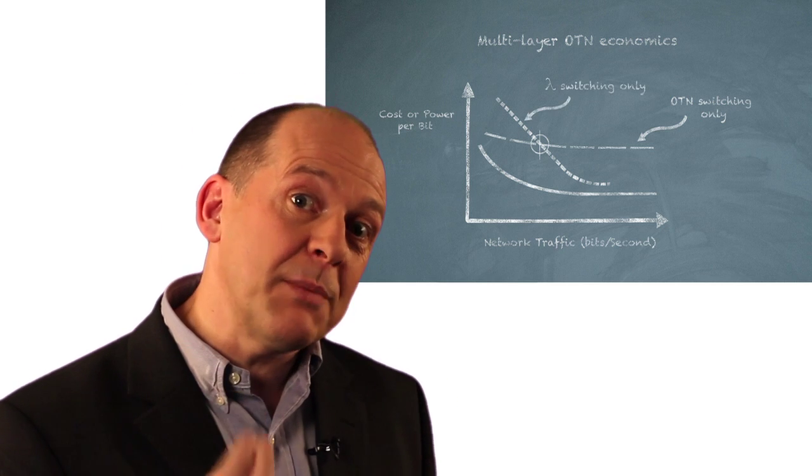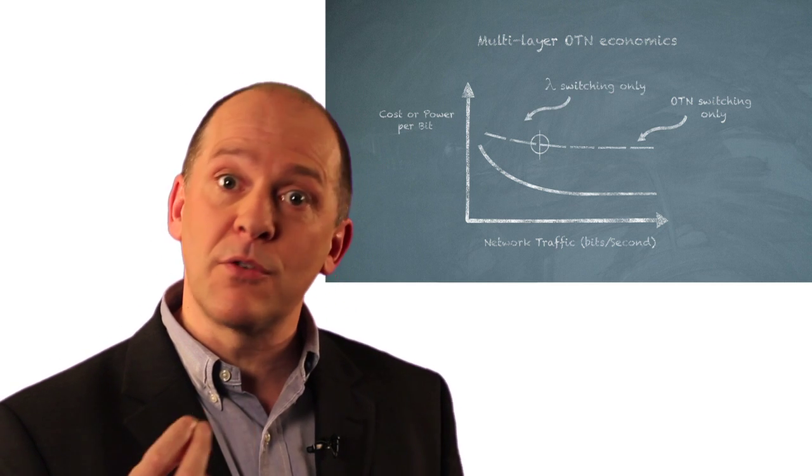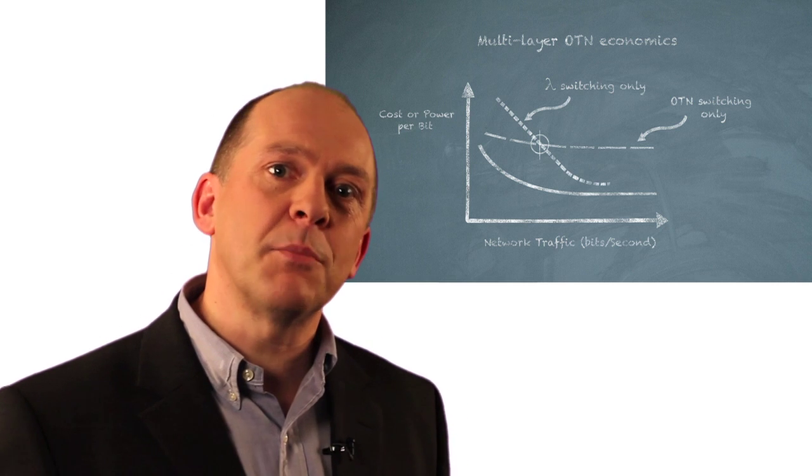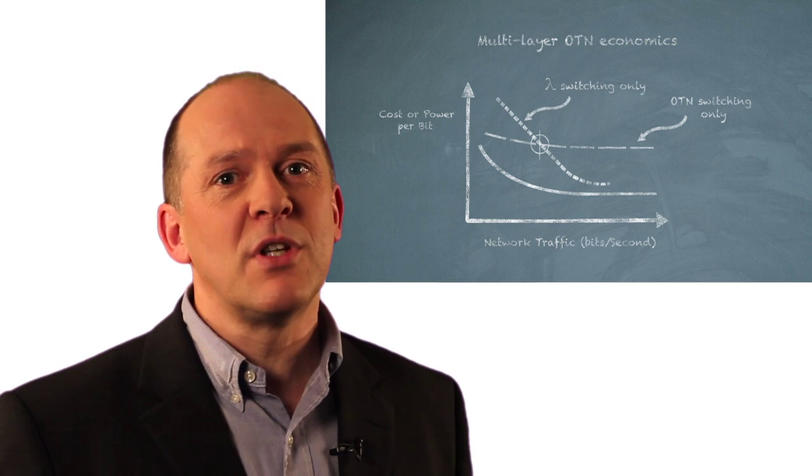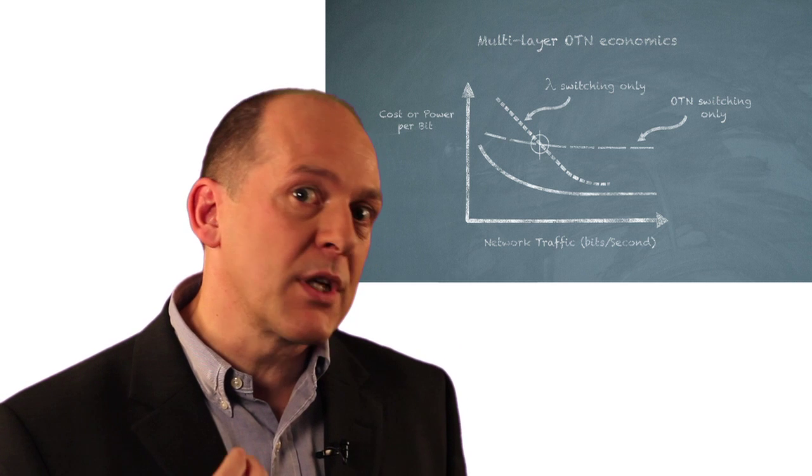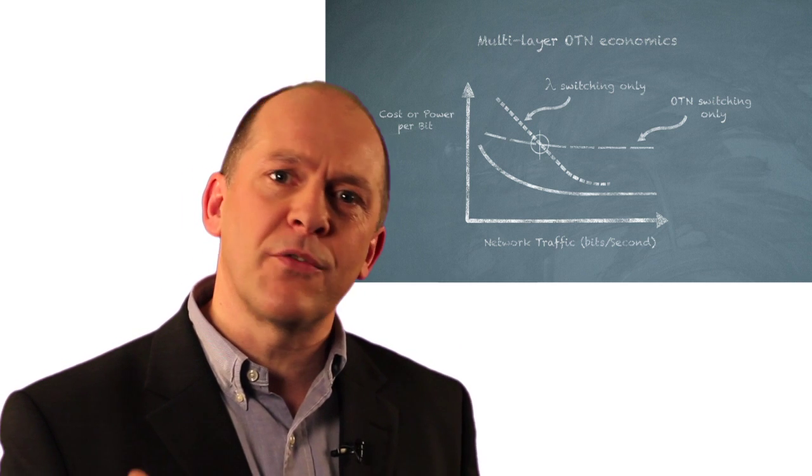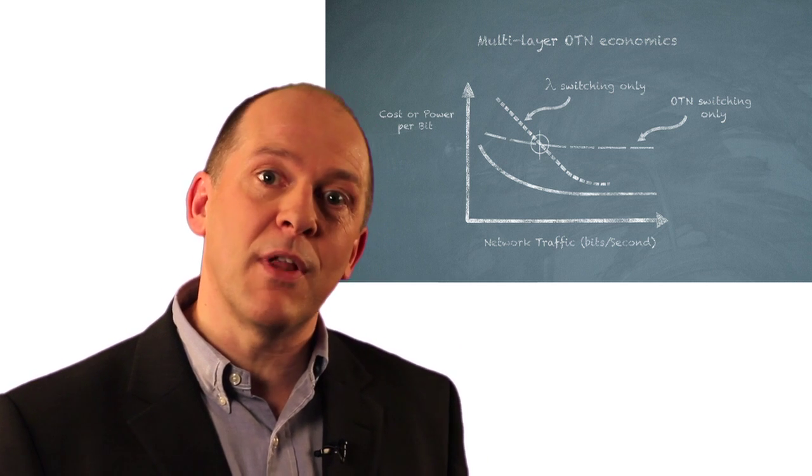And then you'll see there's a steep line going from the top left down to the bottom right. That's a WDM network, where it's not very good if the traffic is lightly loaded or the network is lightly loaded because you're stranding lots of bandwidth within those empty wavelengths.